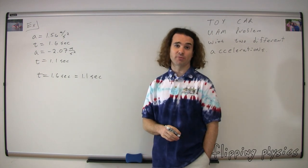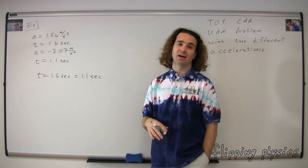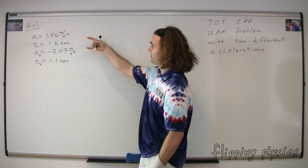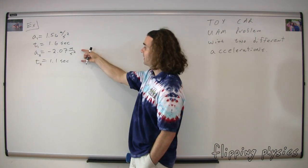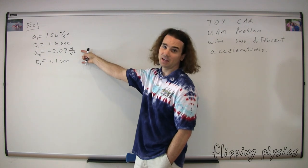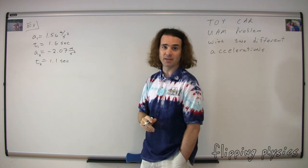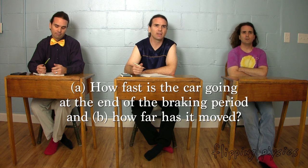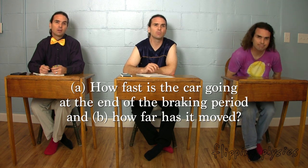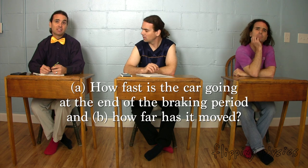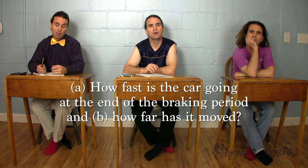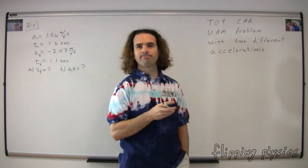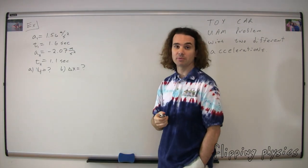Mr. P.: The way that we indicate that variables are for two different parts of a problem is by using subscripts. So you can see we have the acceleration for part 1 and the time for part 1, and then the acceleration for part 2 and the time for part 2. Bobby, please keep reading. Part A, how fast is the car going at the end of the braking period, and Part B, how far has it moved? Part A: velocity final equals question mark, and Part B: displacement equals question mark.